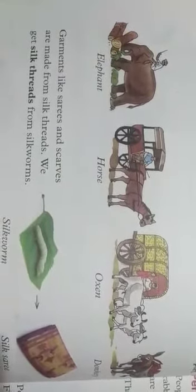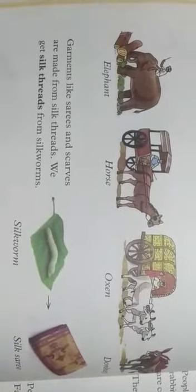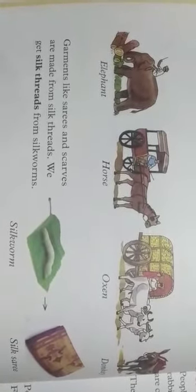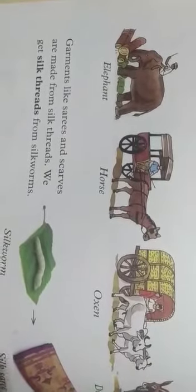Some animals help us to move from one place to another - they are used as a means of transport in olden days. At present we are still using them but in very few quantities. The first one is elephant. Next we have a horse - H-O-R-S-E, horse with its cart. Then we have oxen. The last one is donkey - D-O-N-K-E-Y, donkey. These are the animals used as a means of transport.